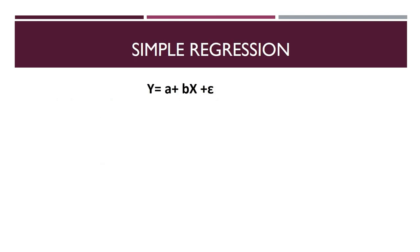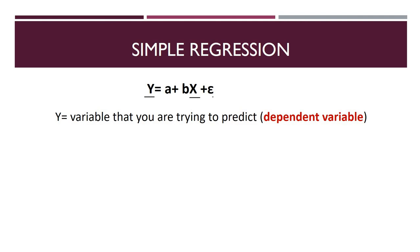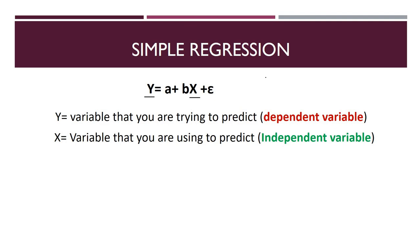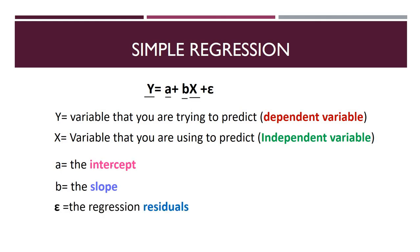Now let's look at the equation. In the simple regression equation we have two variables: the independent variable represented by x and the dependent variable y. The equation is: y = a + βx + error term. Here y is the dependent variable — the variable you are trying to predict. x is the variable used to predict y, the independent variable. A is the intercept, a constant. B (beta) is the slope, and E (error term) is the regression residual.